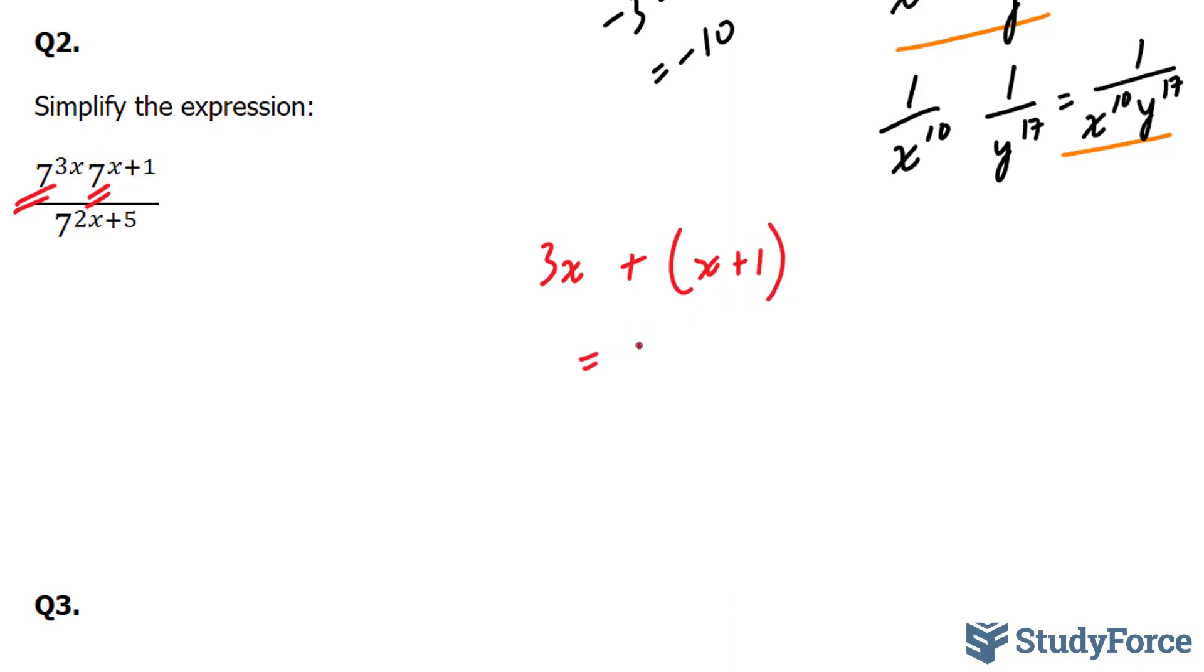And this gives us 4x plus 1 as your final exponent for the top. So we have, essentially, 7 to the power of 4x plus 1. And at the bottom, that stays the way it is. I'm just going to rewrite that.